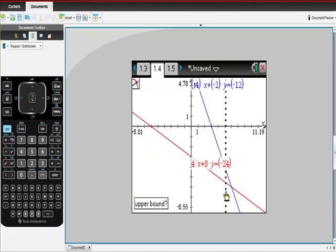See upper bound? Upper bound means a place to the right. So just drag that over, and you can see the intersection right there, can't you? And there's your answer.